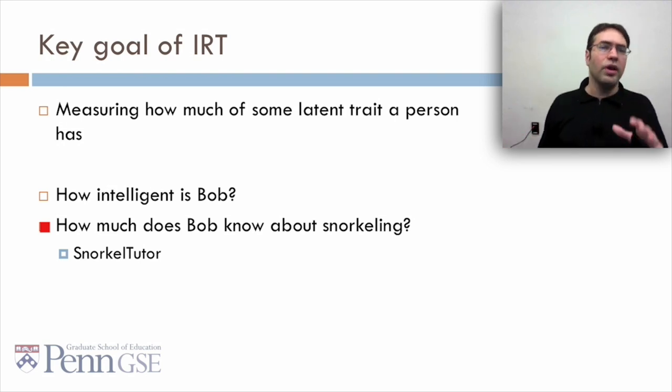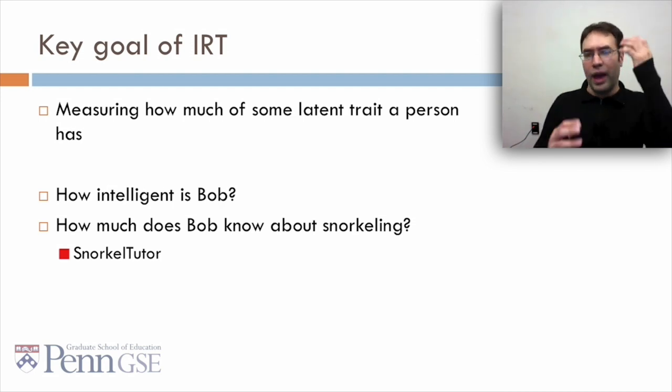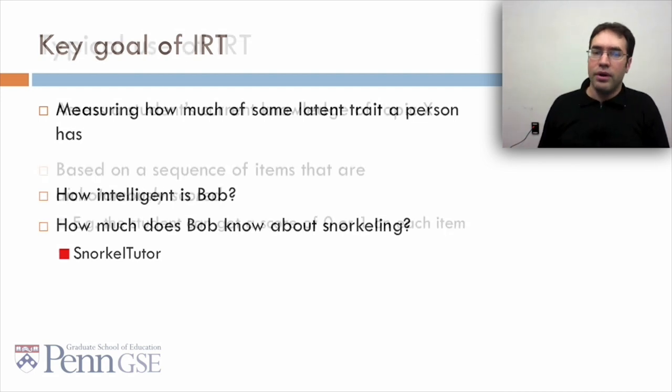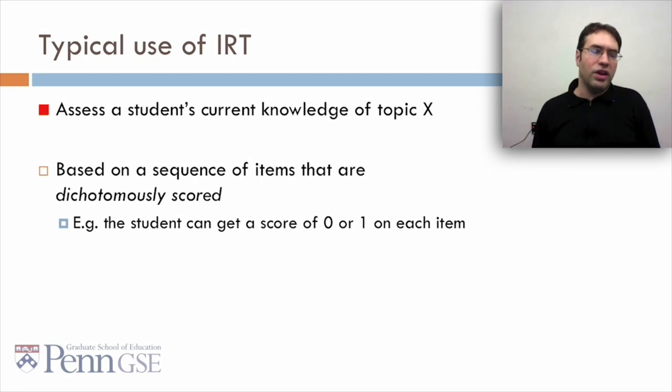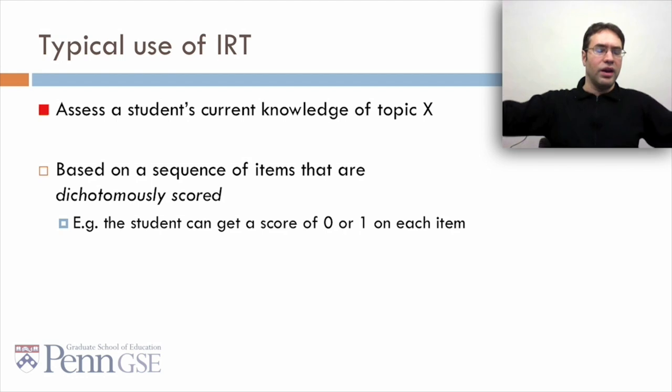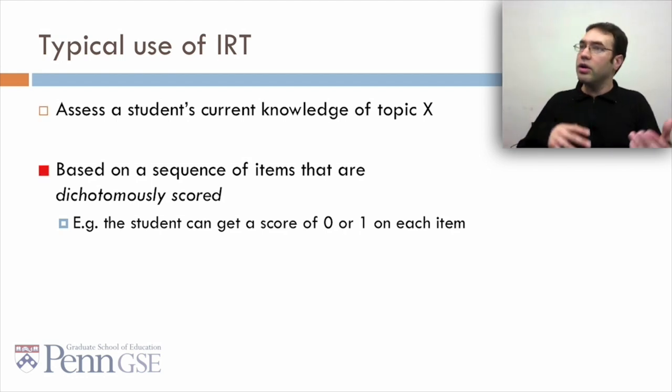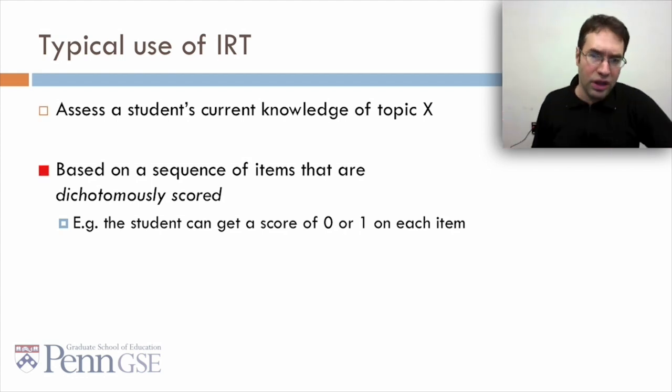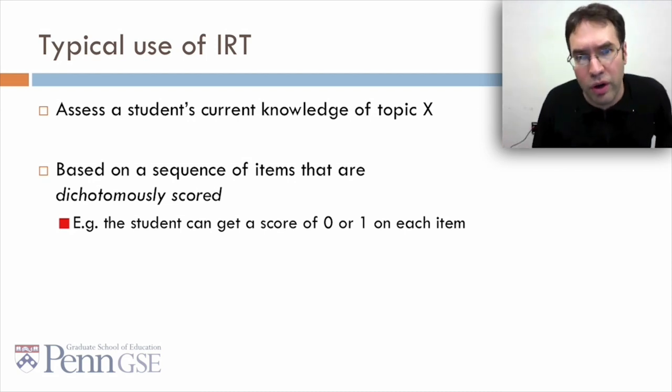You may wonder about my snorkeling example. You should probably check out SnorkelTutor, which is available in your snorkeling app store. A typical use of IRT is to assess a student's current knowledge of a general topic based on a sequence of items that are dichotomously scored. In other words, a student can get a score of 0 or 1 on each item.